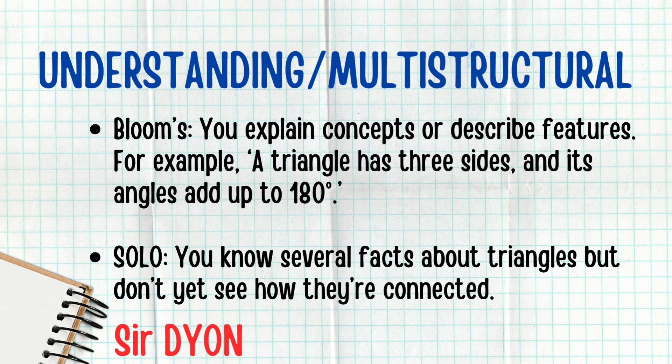Level 2 — Understanding (Bloom's) and Multistructural (Solo). In Bloom's, you explain concepts or describe features. For example, a triangle has three sides and its angles add up to 180 degrees. In Solo, you know several facts about triangles but don't yet see how they're connected.